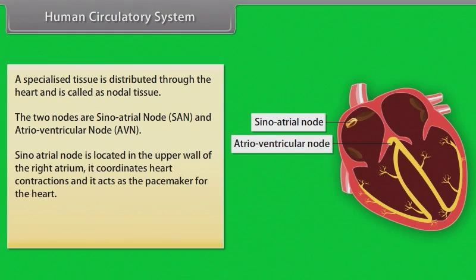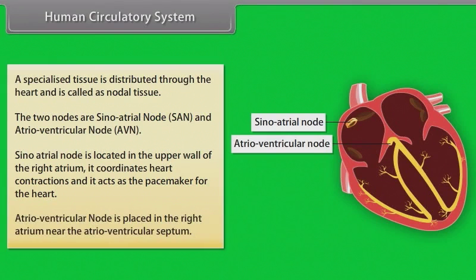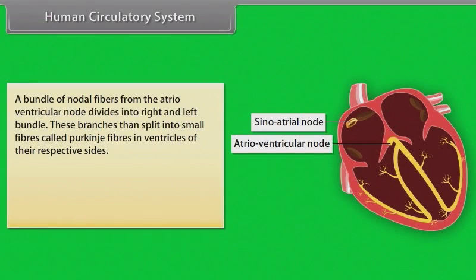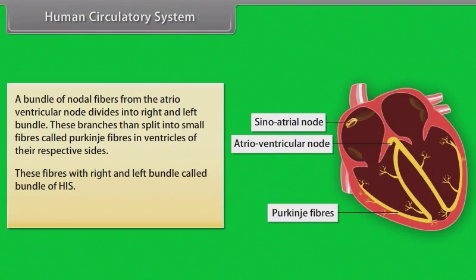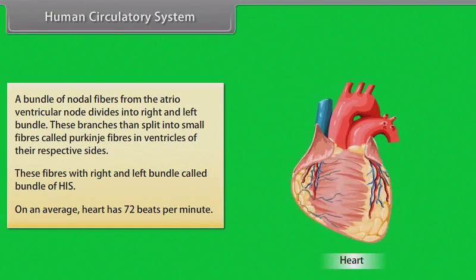The two nodes are the sino-atrial (SA) node and the atrio-ventricular (AV) node. The SA node is located in the upper wall of the right atrium; it coordinates heart contractions and acts as the pacemaker. The AV node is present near the atrio-ventricular septum. A bundle of nodal fibers — the bundle of HIS — divides into right and left bundles, which split into Purkinje fibers in their respective ventricles. On average, the heart has 72 beats per minute.